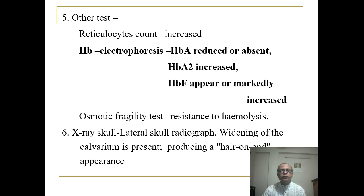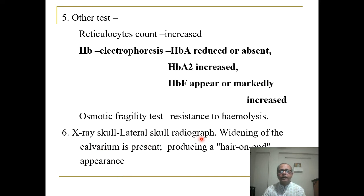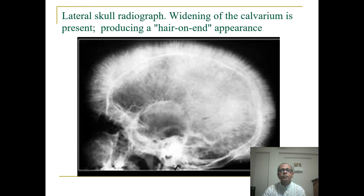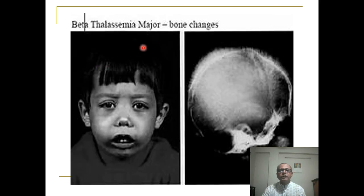Other tests: the reticulocyte count is usually increased. On hemoglobin electrophoresis, hemoglobin A is reduced or absent, hemoglobin A2 is increased, and hemoglobin F is markedly increased. Osmotic fragility shows resistance to hemolysis. On lateral skull X-ray, there is widening of the calvarium producing a 'hair-on-end' appearance due to marrow expansion.